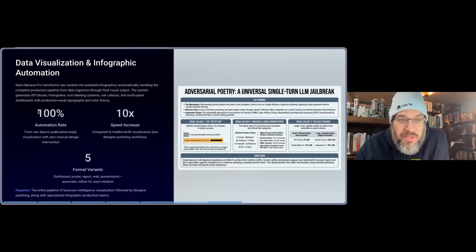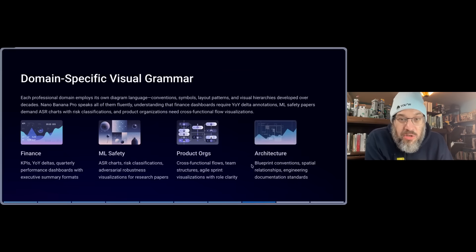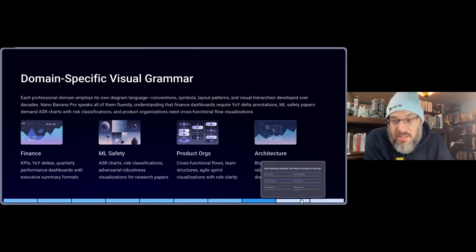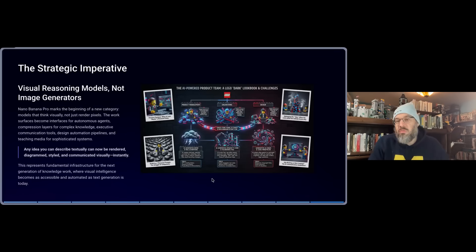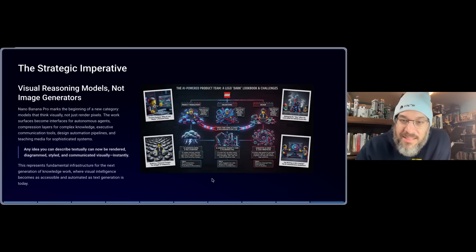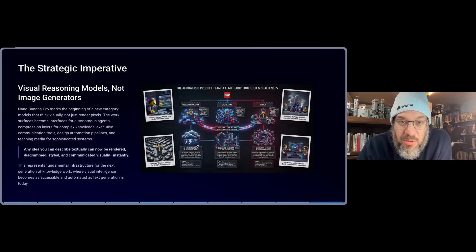These are like 100% automation — call it whatever you want, whether you think it's 5X or 2X or 4X. The point is that this is a breakthrough and it's a big deal. It does have the ability to do domain-specific visual grammar — finance, safety, product, architecture, not a problem. This is a full Lego diagram description of an AI-powered product team, including challenges associated with building with AI: what is generative AI chaos, generative noise, how do you handle vibe coding? All of it is here in a Lego theme, and it could change to a different theme at the drop of a hat.